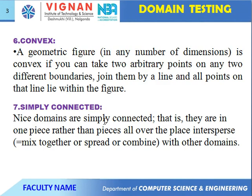Next, convex. A geometric figure in any number of dimensions — one-dimensional, two-dimensional, or three-dimensional — is convex if you can take two arbitrary points on two different boundaries, join them by a line, and all points on that line lie within the figure. Next one, simply connected. Nice domains are simply connected, meaning they are in one piece rather than pieces spread all over the place.